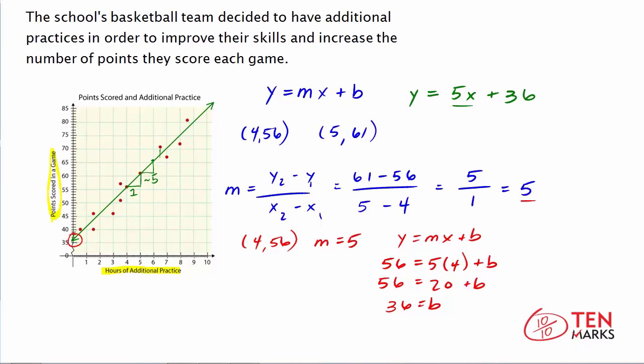Now lastly, we can talk about the y-intercept. Since the y-intercept is where x equals 0, this means with no additional hours spent practicing. So x equals 0 is the normal number of hours that they spend practicing. And each point on the x-axis represents additional hours. So x equals 0 means the normal practice regimen. The team is scoring about 36 points. And as you can see, when they practice more, they start to have better success in their games.